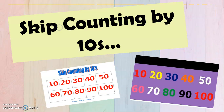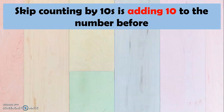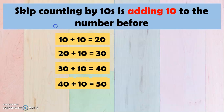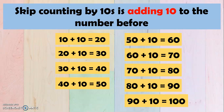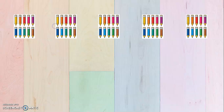Now we can do skip counting by 10s. My dear grade 1, skip counting by 10s is adding 10 to the number before. So we have here 10, and then we add 10, so it's 20. Then 20 plus 10 is 30, 30 plus 10 is 40, 40 plus 10 is 50, 50 plus 10 is 60, 60 plus 10 is 70, 70 plus 10 is 80, 80 plus 10 is 90, and 90 plus 10 is 100.